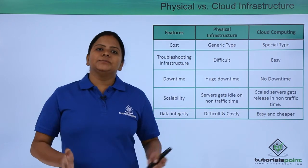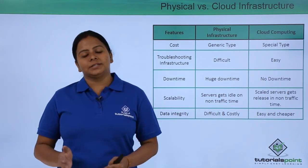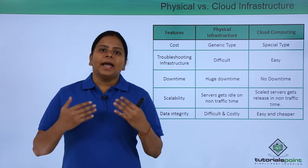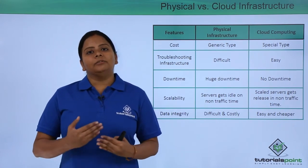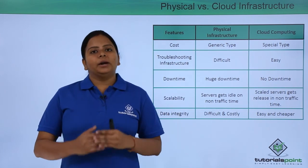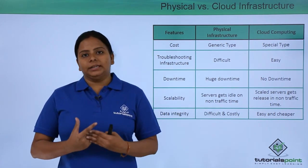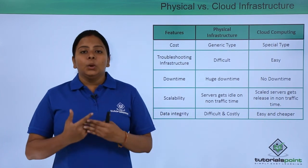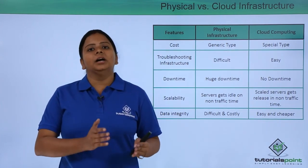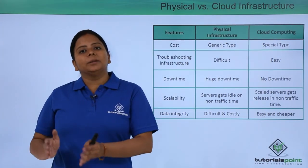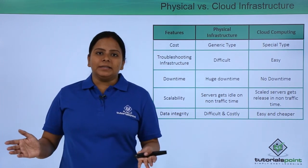Next is data integrity. In a physical infrastructure, you have many users storing data on your servers, along with many applications, services, and software. You need data integrity so that if any server goes down or an application crashes, you have a backup to deploy those services. The availability of this data and software is very important, but it is difficult and costly to manage physically. For example, if you have 500 TB of data, you need an extra 500 TB of space for backup, which is again costly. Maintaining those databases is also very difficult.